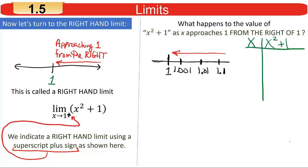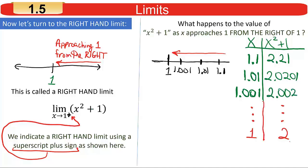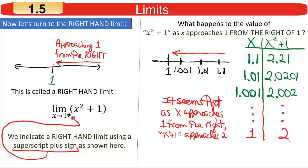If you play the same game and make a chart: plugging in 1.1, squaring and adding 1, you get about 2.21. Putting in 1.01 gives approximately 2.0201. And putting in 1.001 gives about 2.002. You can get as close to 1 as you want, and the closer you get, you'll come to the same conclusion: as x approaches 1, the value of x squared plus 1 is getting closer and closer to 2. So the right-hand limit as x approaches 1 is 2.